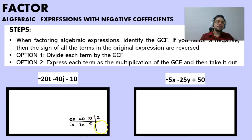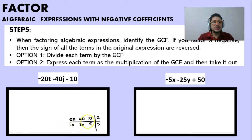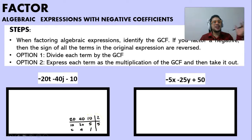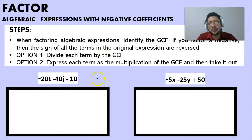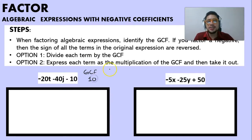Now we can divide them all by 5: 10 divided by 5 is 2, 20 divided by 5 is 4, and 5 divided by 5 is 1. There is no number that divides them all further, so 2 multiplied by 5 is 10 — our greatest common factor is 10.